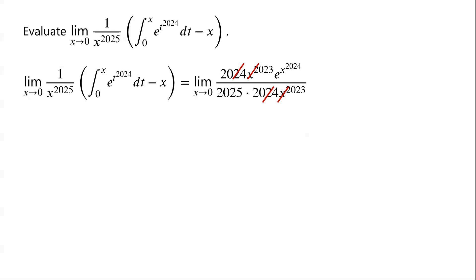The factor 2024 times x to the power of 2023 in the numerator and that in the denominator cancel. So the limit is equal to the limit of e to the power of x to the power of 2024, over 2025, as x tends to 0. Since e to the power of x to the power of 2024 tends to 1 as x tends to 0, the limit is equal to 1 over 2025. That is the answer.